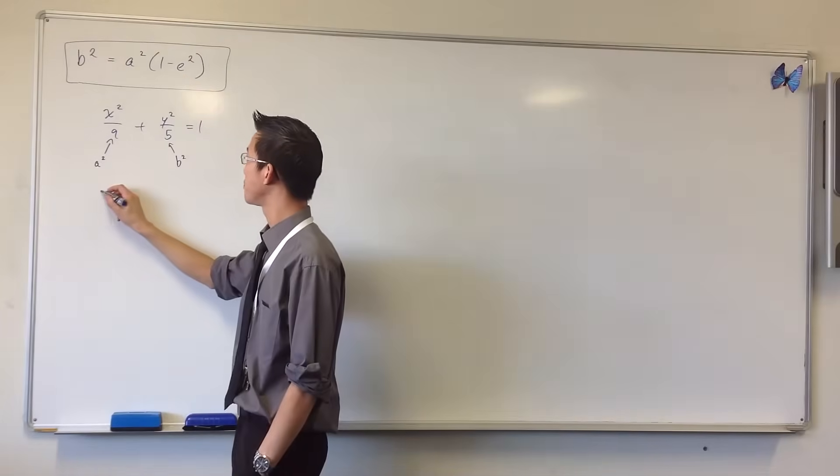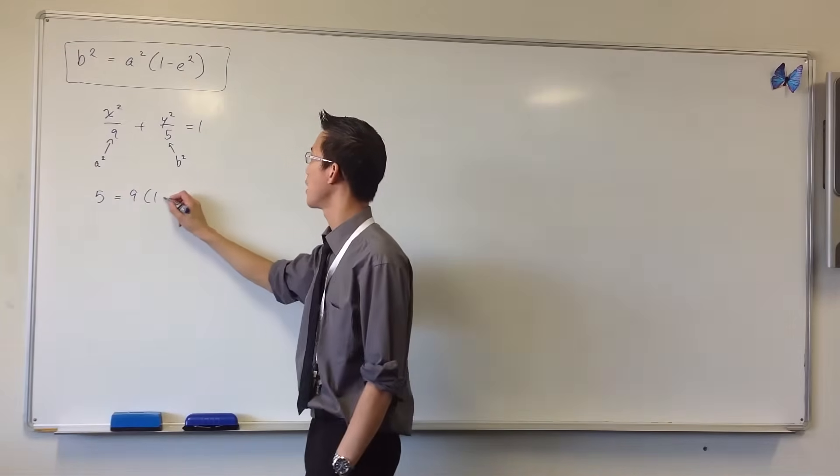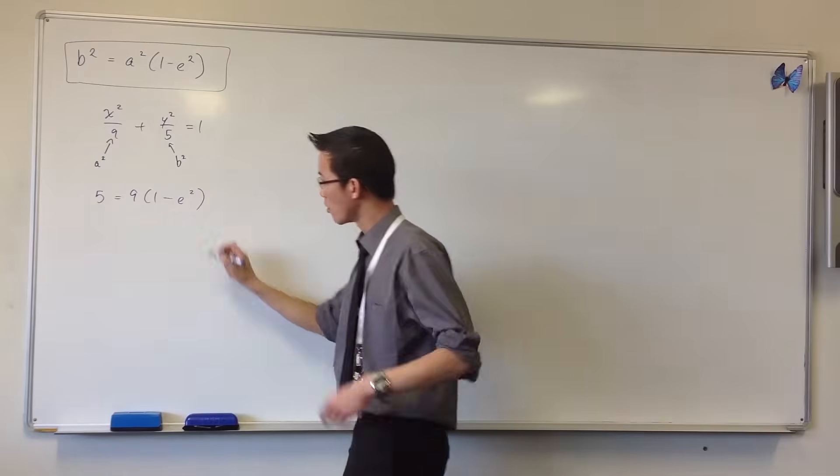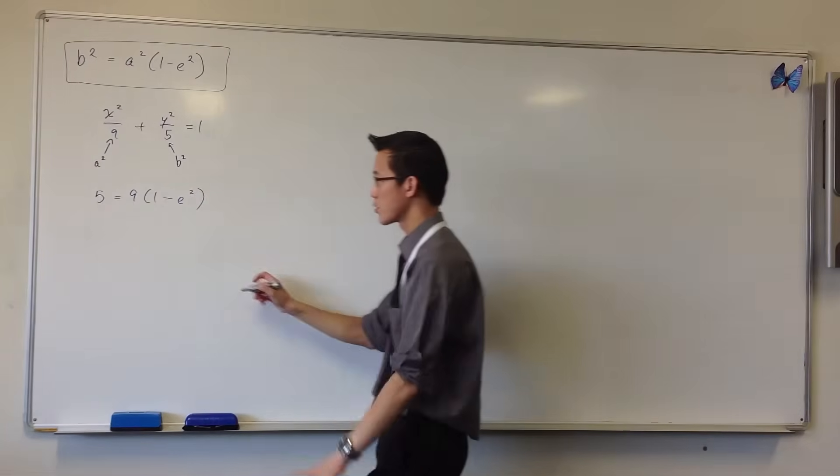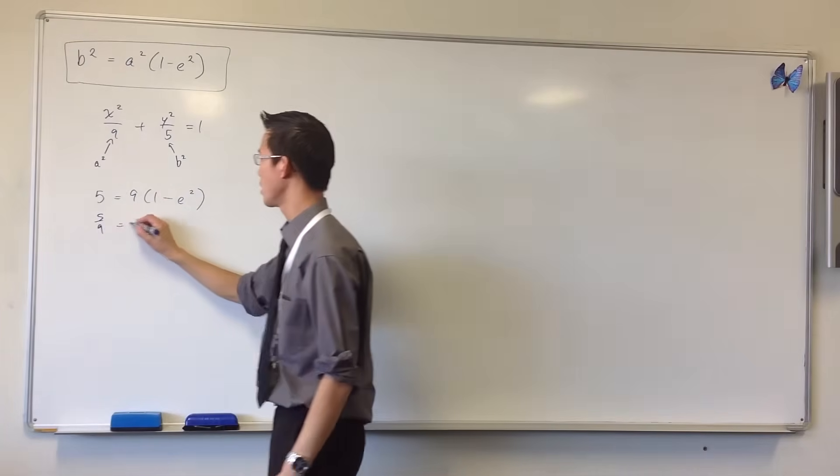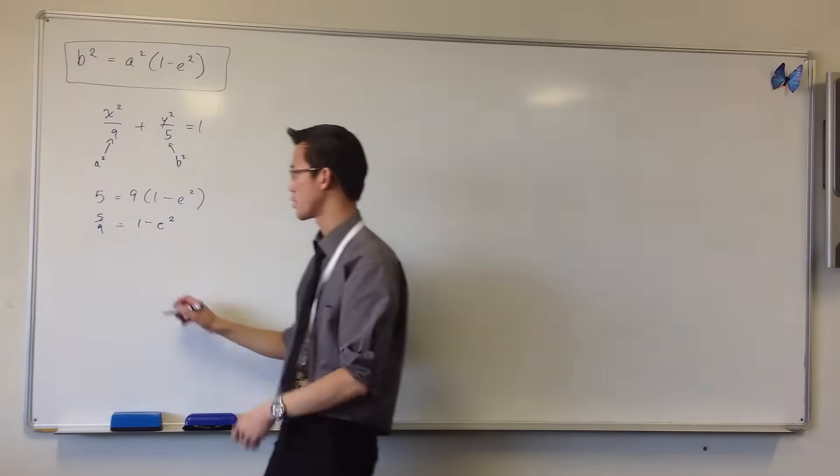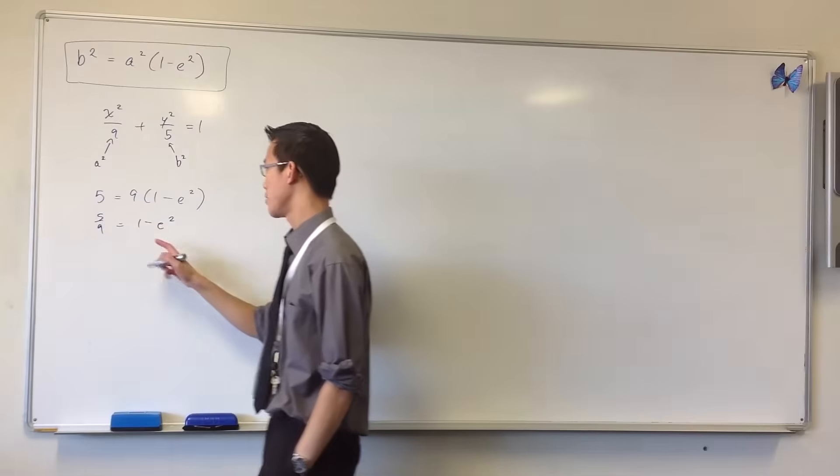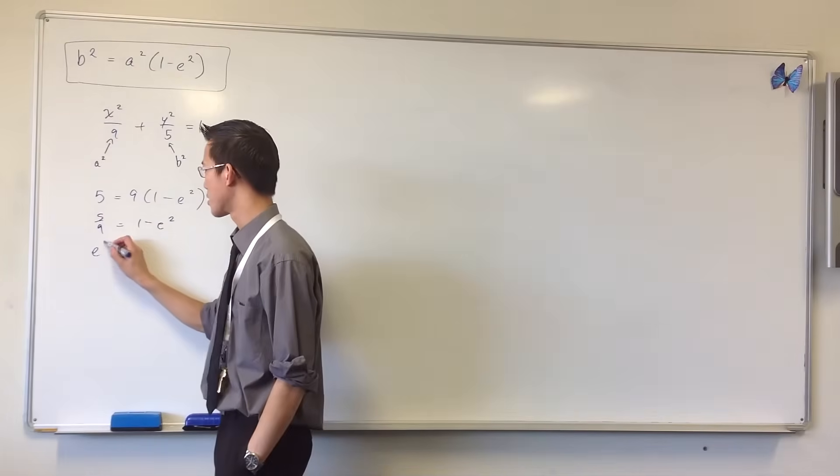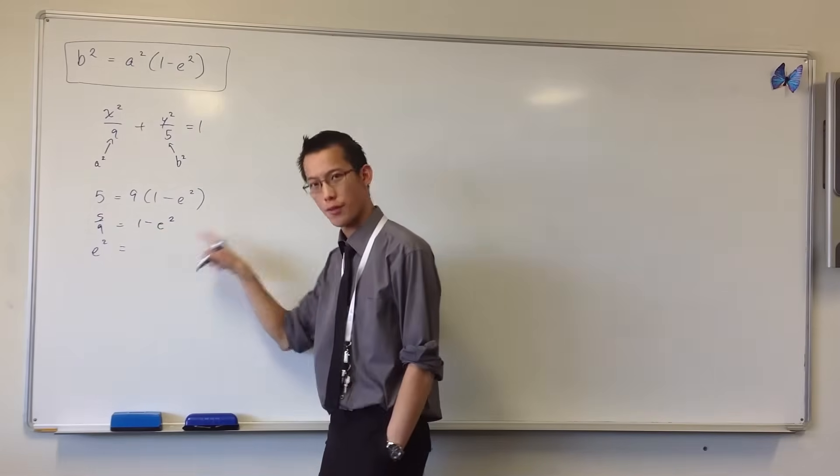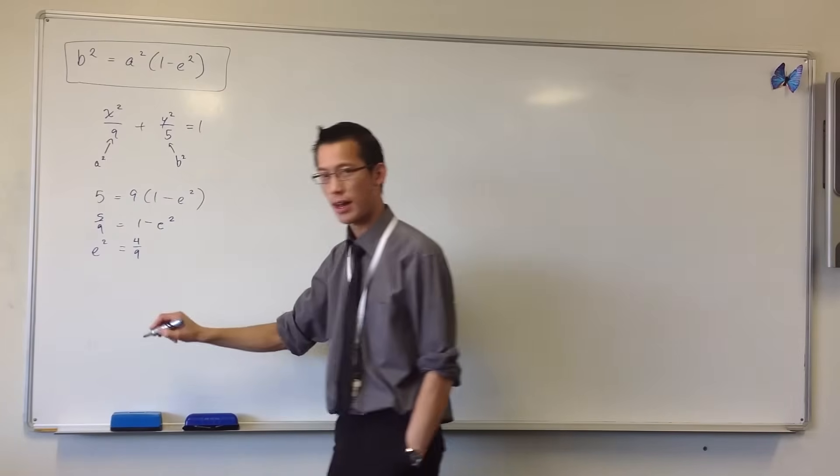Let's just quickly do that. You've got 5 equals 9 minus 9 times (1 minus e²). So shift things around a little bit, you have 5 over 9 equals 1 minus e². Subtract 1 from both sides, or maybe rather add e² to this side and subtract 5 over 9 from this side. That gives you 4 over 9.